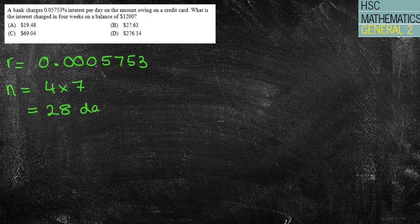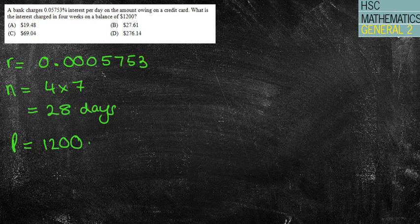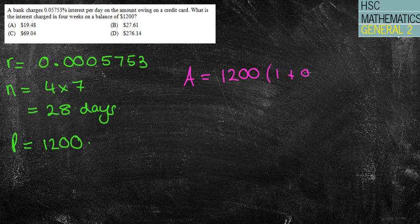And then on a balance of $1,200, so my principal equals $1,200. Now notice there that they don't mention anything about simple interest or compound interest. So we spoke about this before: if that was the case, this is a compound interest question because credit card, because done percent per year. So my amount equals a balance, a principal, of $1,200 times (1 + 0.0005753) to the power of 28.